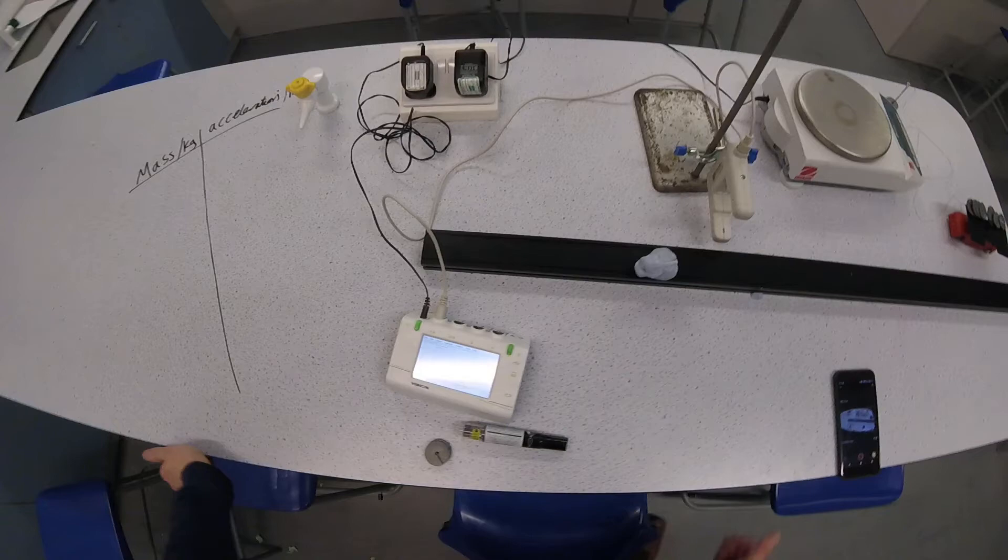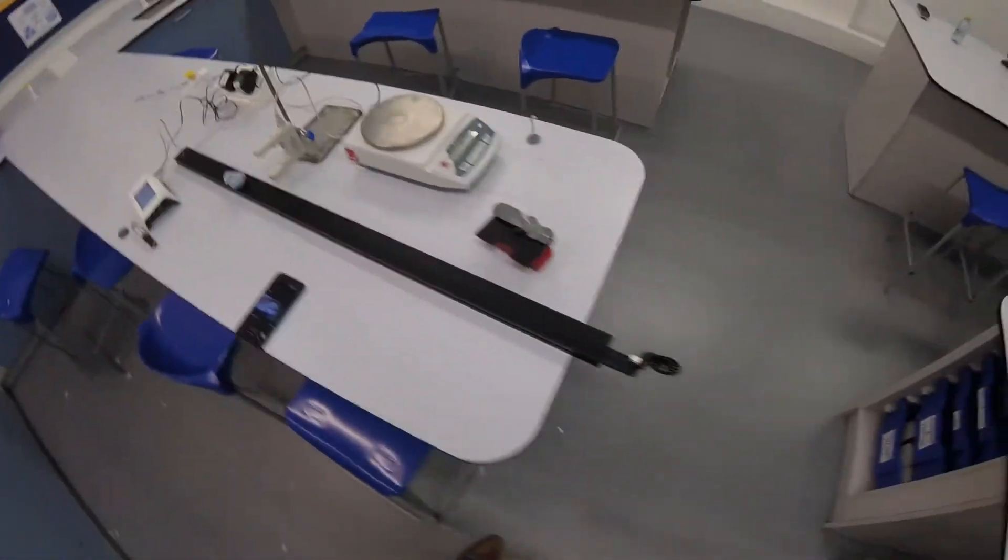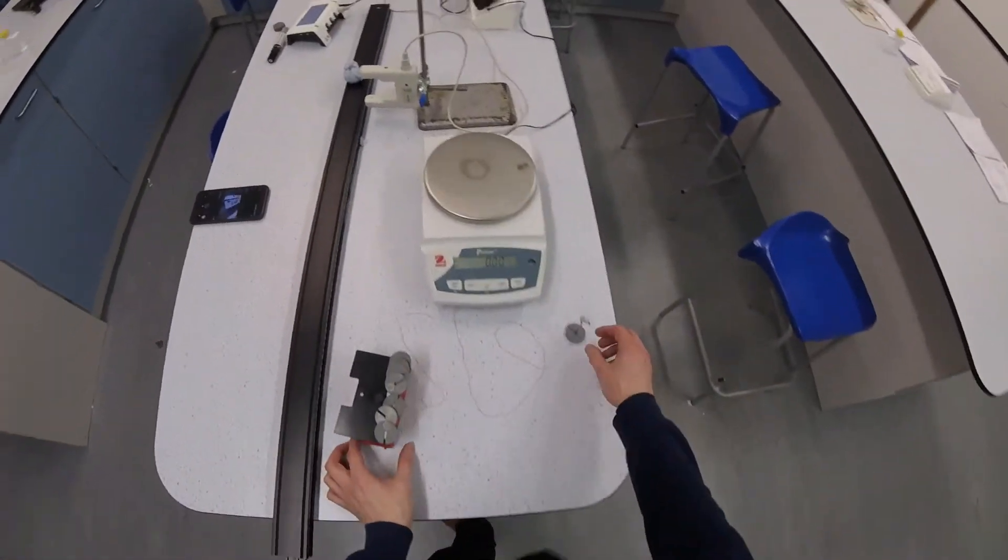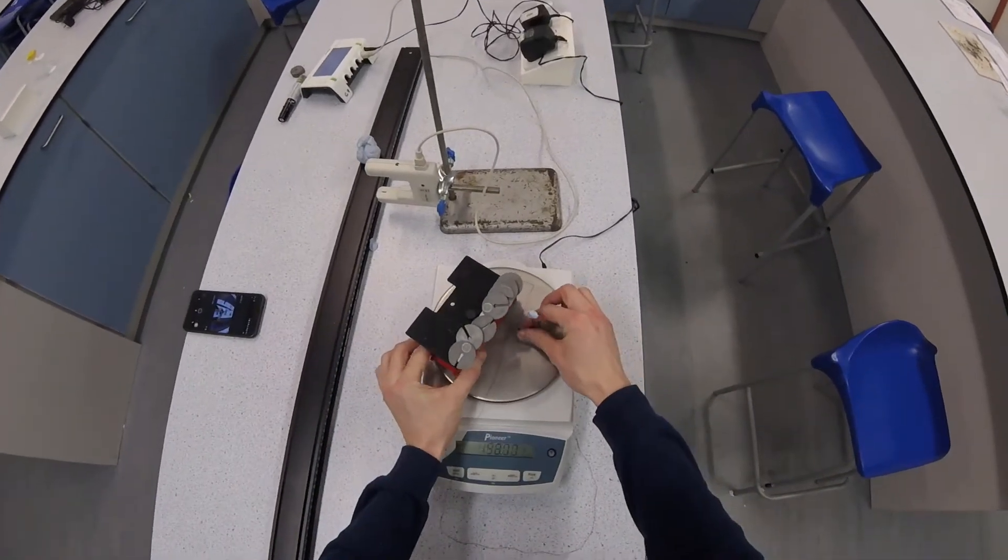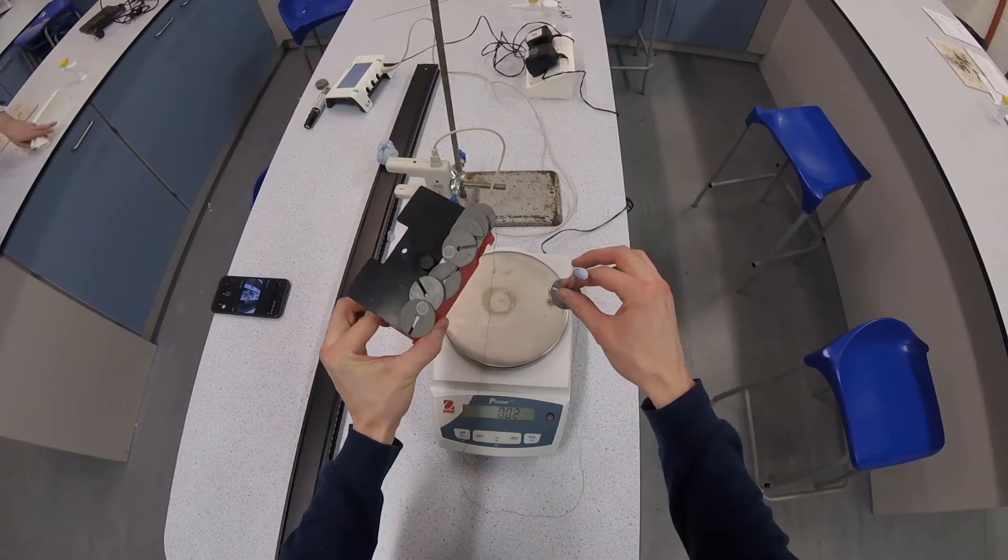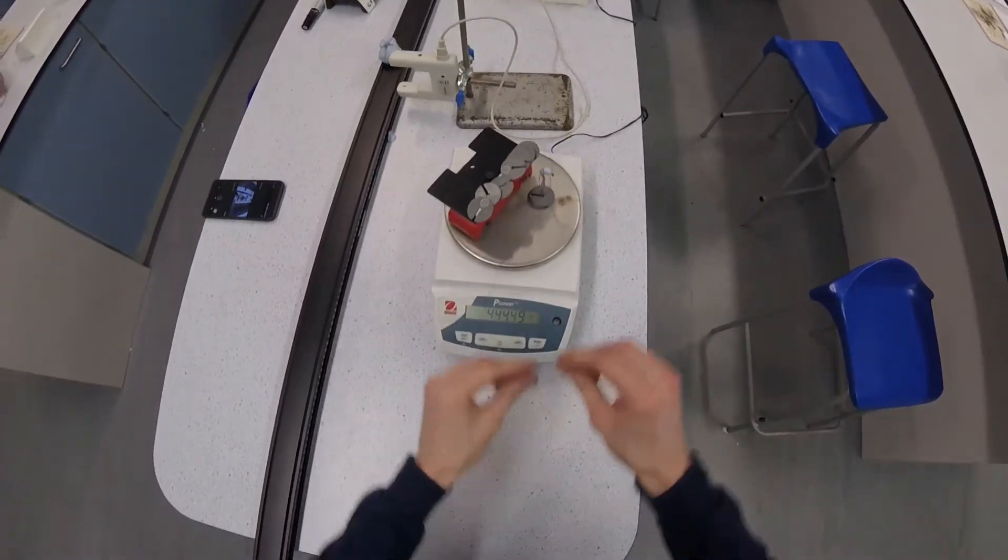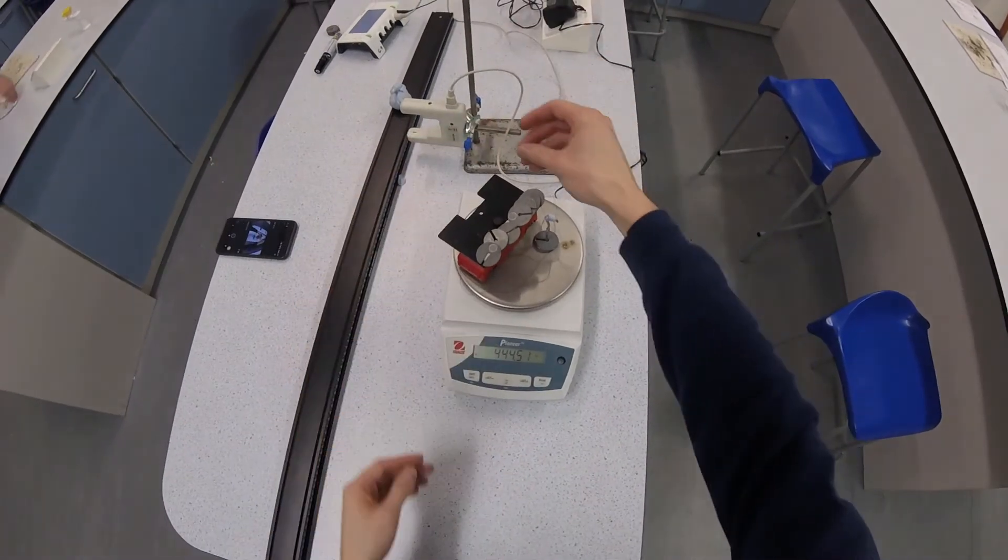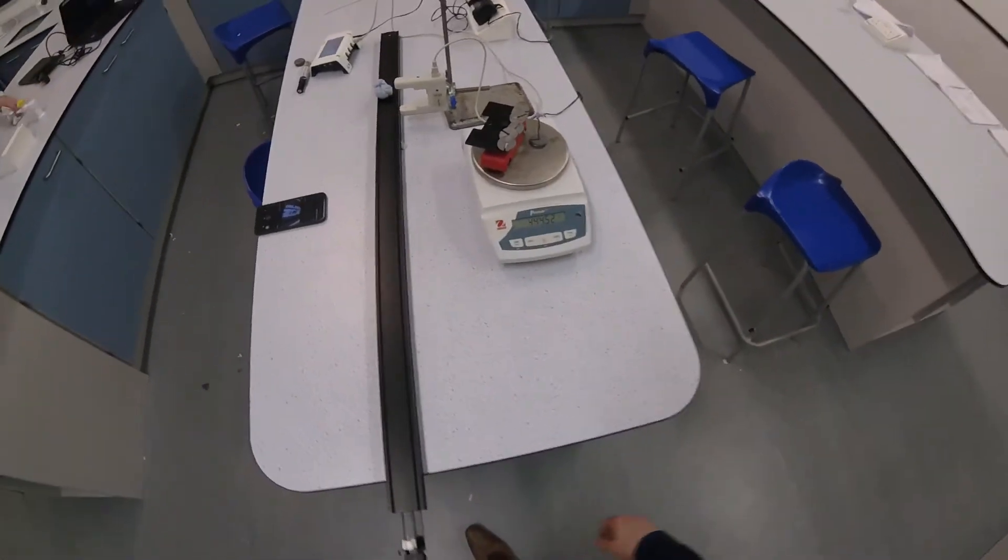So I'm going to play the video. First thing to do is measure the mass of everything that's being accelerated, which is what I'm doing here. So I've put the car which is being accelerated, I put the slotted masses down also being accelerated, and I put the string on just for completeness. I can see that it's just under half a kilogram in total.